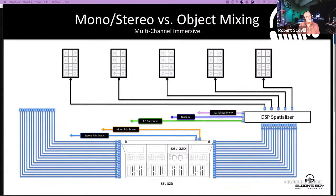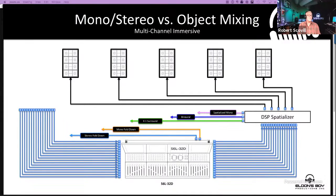Now we're talking about spatialization — a very different world in terms of how much audio gets transported up to the spatializer. If we're talking about objects, we're talking 64 outputs, 96 outputs, whatever we want, and those outputs get pushed up to the spatializer where we place them in the speaker system field. In this situation we have five across the front, seven, nine, or ten — it doesn't matter. All you're increasing is resolution at that point, because the spacing between any two arrays decreases every time you add more arrays.